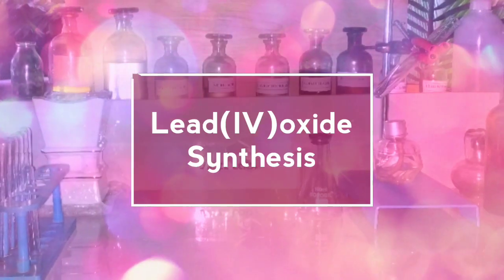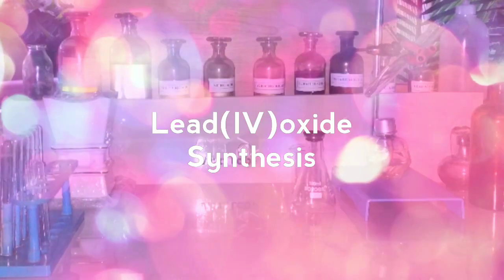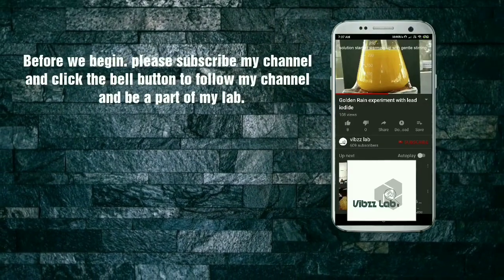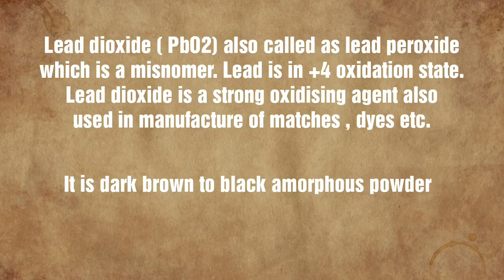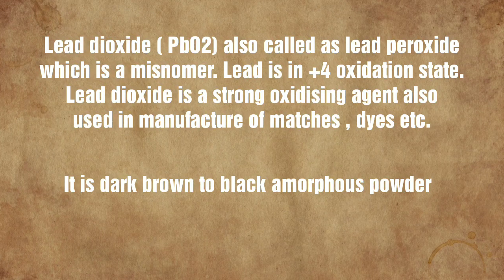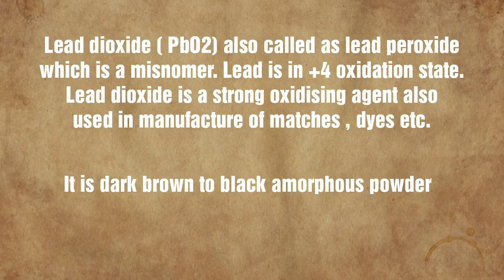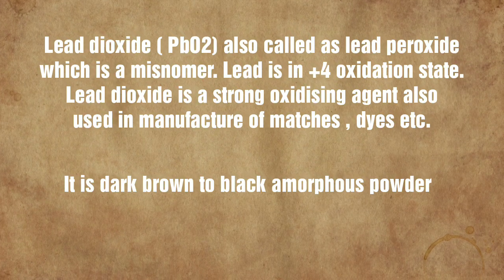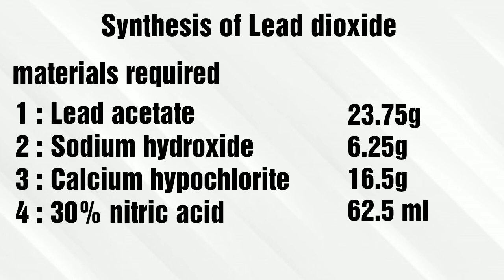Friends, today we would be synthesizing lead 4 oxide or lead dioxide. Lead dioxide, also mistakenly known as lead peroxide, is a very strong oxidizing agent. It is a dark brown to black amorphous powder. For the synthesis of lead dioxide we require lead acetate trihydrate, sodium hydroxide, calcium hypochlorite — that is bleach — and 30% nitric acid.